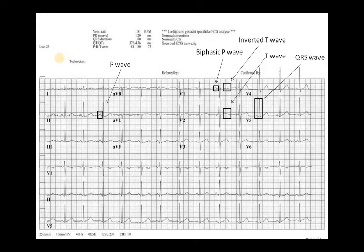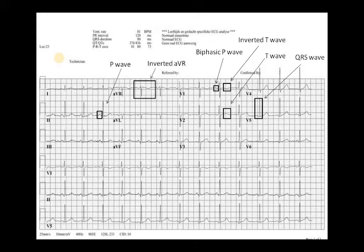To summarize: the biphasic P wave, the inverted T wave in V1, and the QRS complexes are visible. Also note that in the AVR lead, all complexes are inverted, because the impulse in a normal heart always travels away from that lead. The inverted complexes of lead AVR are clearly visible here, as explained in lecture 2.